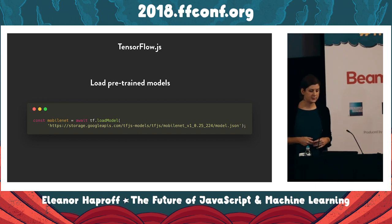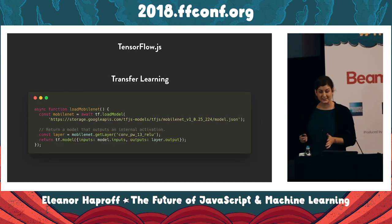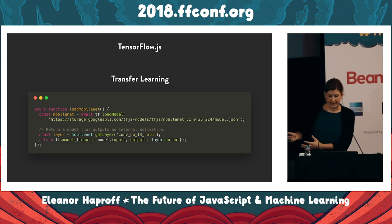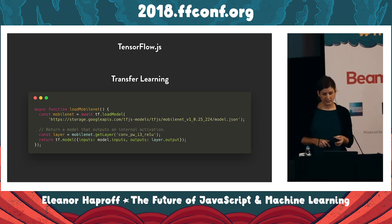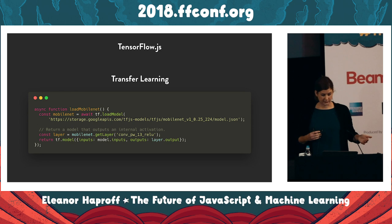As well as training a model and loading a pre-trained model, the third thing you can do with TensorFlow is transfer learning. This is where you train the tail end of an existing model. Using the MobileNet example, you would load the model, save it to a variable, then call getLayer on it and pass the name of the layer. Once you have this layer, you can create your own model and train it with your own data. The Pac-Man demo was using MobileNet and retraining it with the user's extra images captured during the training, for example.